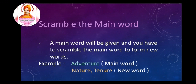Using this word building, I'm going to teach you two activities. The first one is scramble the main word. A main word will be given and you have to scramble the main word to form a new word. For example, 'adventure' is a main word, and using this word you are going to form a number of words, like 'nature' and 'tenure'.